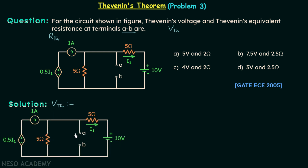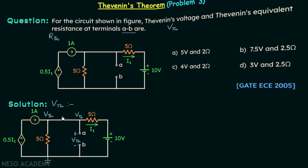Vth is the open circuit voltage at the terminals. If we assume this node to have zero potential, this point will have zero potential, this point will also have zero potential, making the potential at this node equal to Vth. This wire has no resistance, therefore this node will also have the potential Vth.